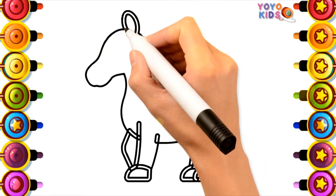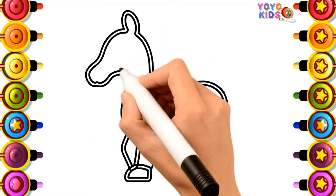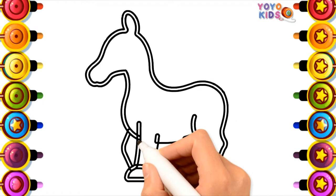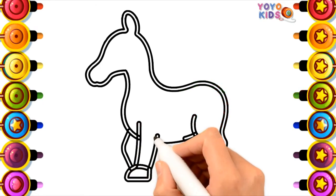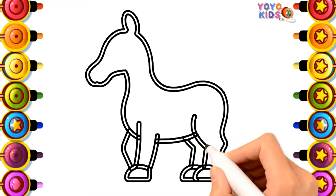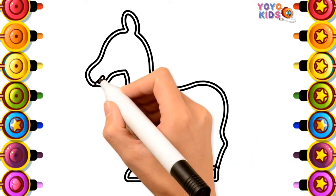Old MacDonald had a farm, E-I-E-I-O. And on his farm he had a dog, E-I-E-I-O. With a here and a there, here, there, everywhere. Old MacDonald had a farm,